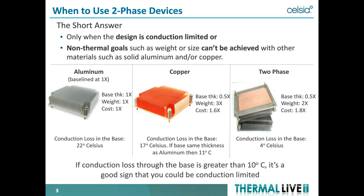We have three examples comparing the same application, same heat sink format, same airflow, same power. An aluminum heat sink, a copper heat sink, and a heat sink with a vapor chamber embedded in the base. For aluminum, the delta T due to conduction in the base is about 22 degrees. Going to copper and keeping the same base thickness cuts it in half to 11 degrees, though often thinning the base gives 17 degrees. But with a two-phase device, the conduction loss is only 4 degrees — that's why you'd go to two-phase.